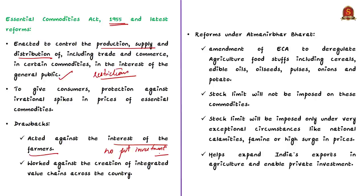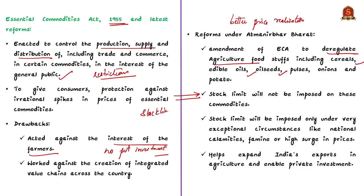This will happen by attracting investments and making agriculture more competitive. The amendment includes deregulation of agricultural foodstuffs like cereals, edible oils, oilseeds, etc. Unlike previously, stock limits will not be imposed on these commodities. Under the existing regime, government could set stock limits for all these commodities, but now these commodities will be deregulated. Reducing controls under ECA would expand India's agricultural exports and also enable large private investment in this sector.